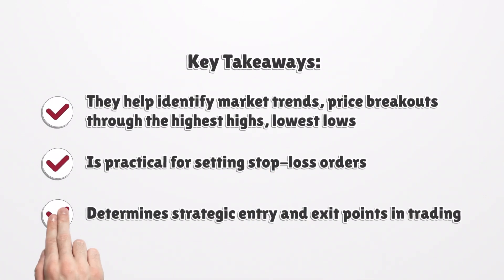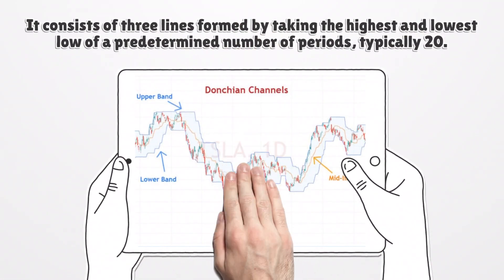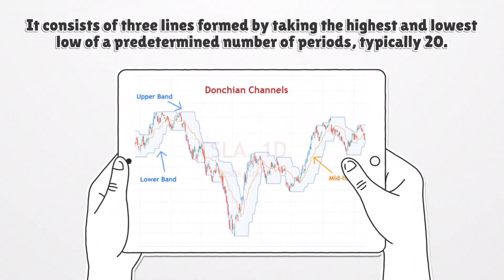Donchian Channels help identify market trends and price breakouts through the highest highs and lowest lows over a set period. The indicator is practical for setting stop-loss orders and determining strategic entry and exit points in trading. It consists of three lines formed by taking the highest high and lowest low of a predetermined number of periods, typically 20.